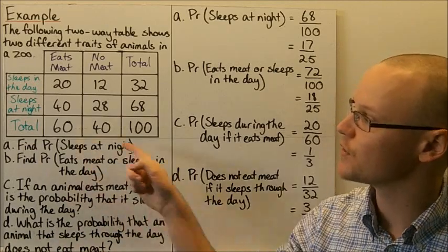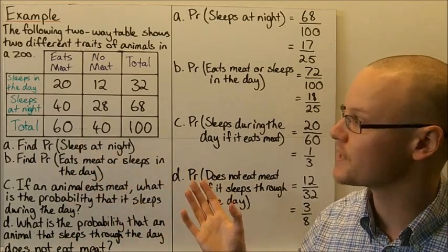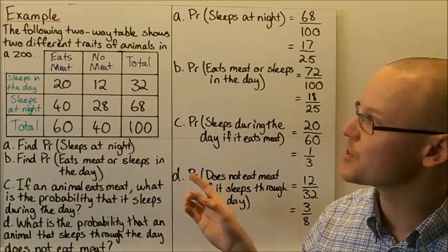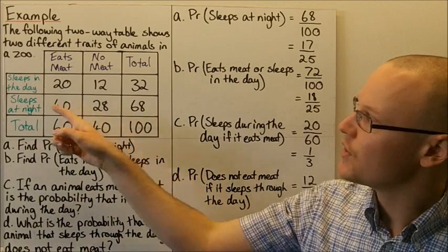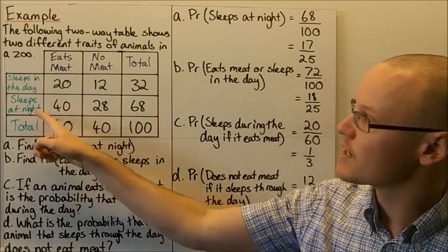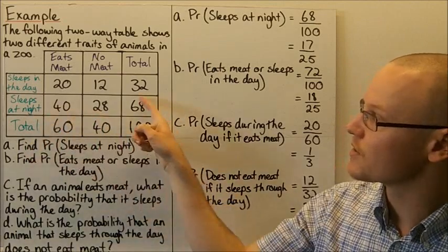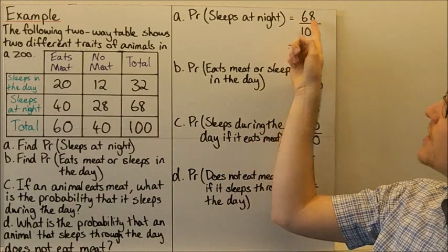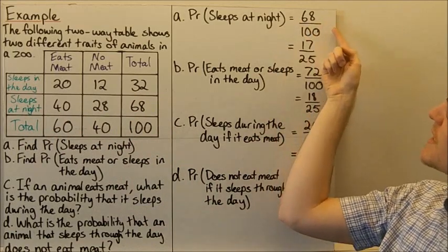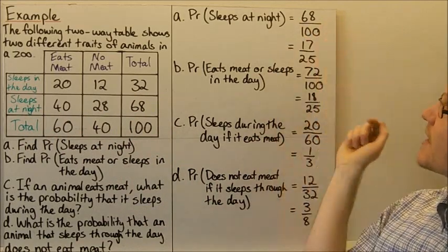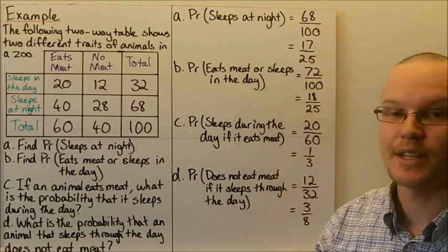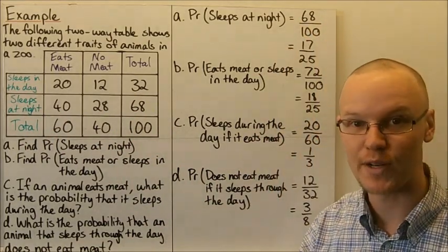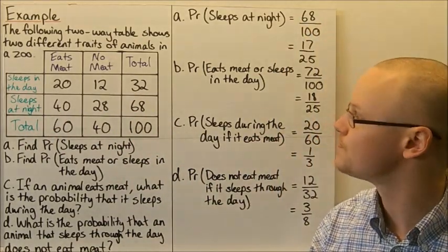For the first question — find the probability that an animal sleeps at night — the animals that sleep at night total 68 out of 100. So the probability is 68 over 100, which simplifies to 17 over 25.